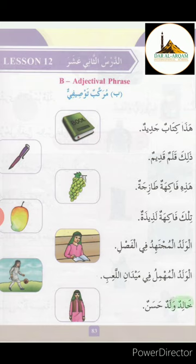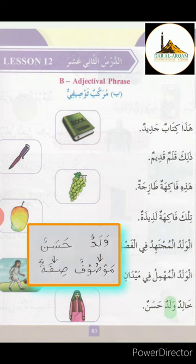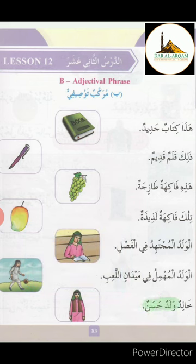خَالِدٌ وَلَدٌ حَسَنٌ. خَالِدٌ is a name, وَلَدٌ means 'boy', حَسَنٌ means 'good'. وَلَدٌ حَسَنٌ means 'good boy'. Here وَلَدٌ is mausuf and حَسَنٌ is sifat. وَلَدٌ حَسَنٌ — good boy.